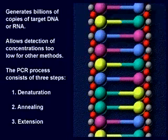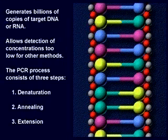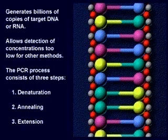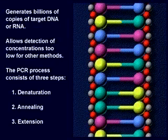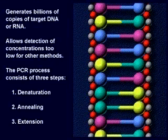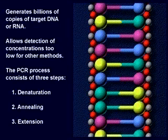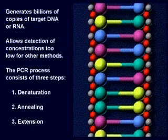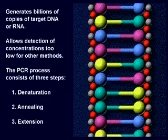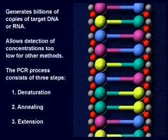Polymerase chain reaction, or PCR, is an in vitro technique that imitates the body's ability to replicate DNA. This patented technology is used to generate billions of copies of a targeted DNA or RNA sequence from a target organism, such as a virus or genetic mutation. PCR technology allows detection of extremely low concentrations of target organisms, undetectable by other diagnostic methods.